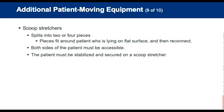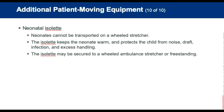The scoop stretcher is designed to split into two or more pieces that are fitted around a patient lying on the ground or flat surface. The parts are reconnected and the patient is lifted onto the backboard. Both sides of the patient must be accessible, and the patient must be fully immobilized and secured. The neonatal isolette is for neonatal patients — birth to 30 days. It cannot be transported on the wheeled stretcher; it keeps the neonatal patient warm with moistened air in a clean environment and protects from noise, drafts, infection, and excessive handling. The isolette can be placed directly on the wheeled stretcher and secured with seatbelts, or freestanding and secured in the back of the ambulance.